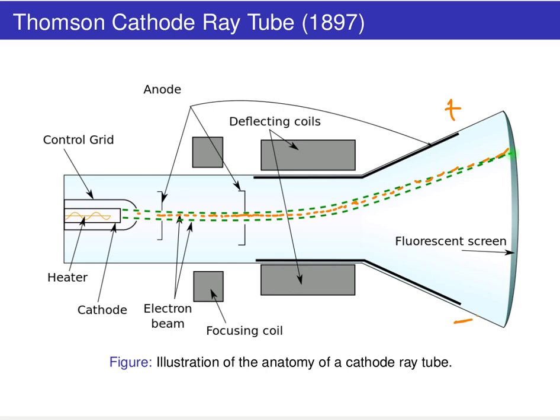The point is that if these particles were neutral, there would be no deflection — shown in blue. That's what we would expect if we had a neutral particle.